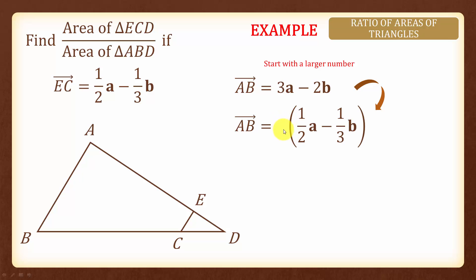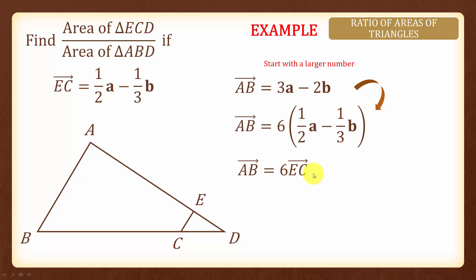Yes, we can multiply with 6. Because 6 times one-half A will be 3A, and 6 times negative one-third B will be negative 2B. So vector AB is equal to 6 times vector EC, which means AB is 6 times the length of EC.